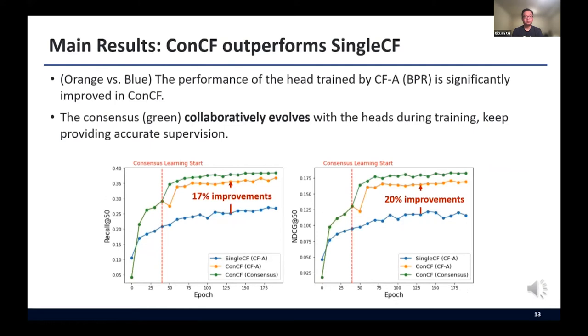First of all, we observed that ConCF significantly outperforms single CF. The below figure shows the training curves of single CF and ConCF. By comparing orange line and blue line, we can clearly see that the performance of the head trained by CFA, which is BPR loss, is significantly improved in ConCF. Also, we can see that the consensus gradually evolves with the heads during the training, keep providing accurate supervision to the model.